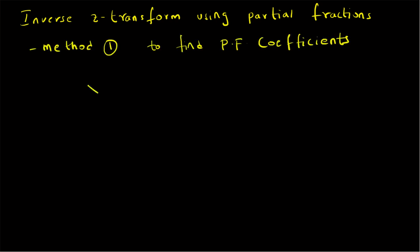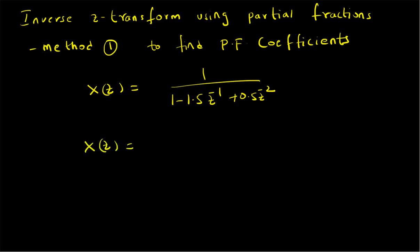Given the z-transform X(z) = 1 / (1 - 1.5z⁻¹ + 0.5z⁻²), we want to find the inverse z-transform using the partial fractions approach. First, we have to convert X(z) into a rational polynomial with only positive powers of z. For that purpose, we multiply and divide by z², giving us z² / (z² - 1.5z + 0.5), which is a rational polynomial in terms of positive powers of z.